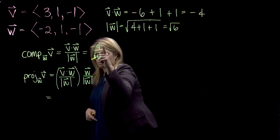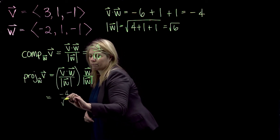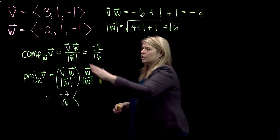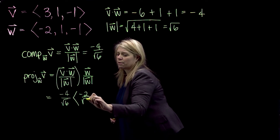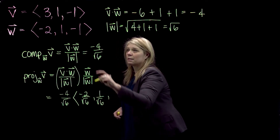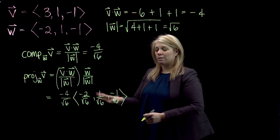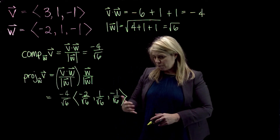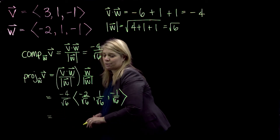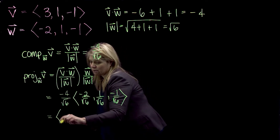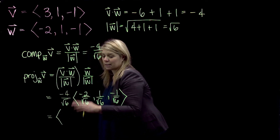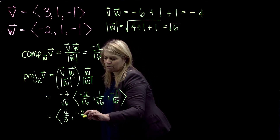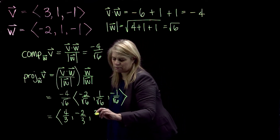Going ahead with the calculation using our previously computed values: the scalar is negative 4 over square root of 6, and the unit vector in the direction of W has components negative 2 over √6, 1 over √6, and negative 1 over √6. Distributing through: negative 4 times negative 2 over 6 gives 8/6, which reduces to 4/3; negative 4 times 1 over 6 gives negative 2/3; and 4 over 6 gives 2/3.